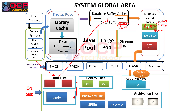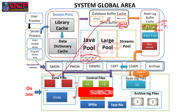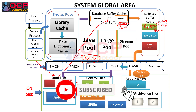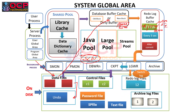Once the log writer's work is completed, the log writer signals the checkpoint process. The checkpoint updates the same information into the control file and the data file header with the current SCN number — the System Change Number. Each modification has an SCN number so the system can identify the particular entry, its time, and other transaction details.